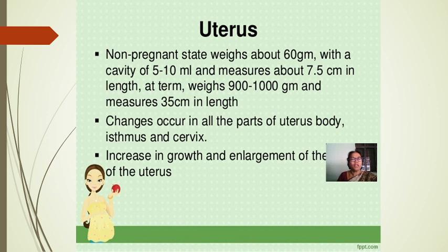Regarding the uterus: in the non-pregnant state it weighs about 60 grams, with a cavity of 5 to 10 ml and measures about 7.5 cm in length. At term, the uterus gains weight from 900 to 1000 grams and measures about 35 cm in length. Changes occur in all parts — body, isthmus, and cervix.